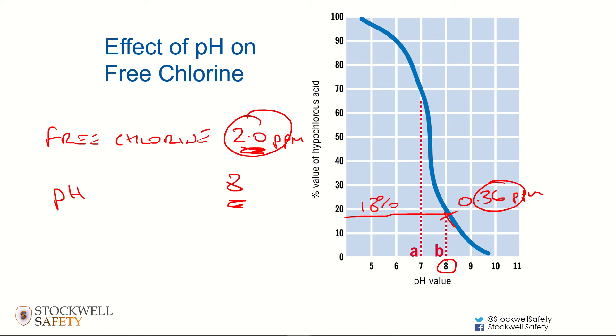That's the main reason why it's important to keep pH controlled. You want to keep the pH between 7.2 to 7.6.